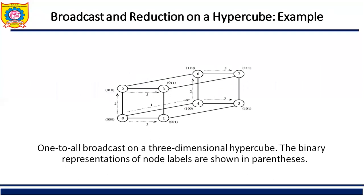This is broadcast and reduction on hypercube example. As shown in this figure, it shows a one-to-all broadcast on an eight-node, three-dimensional hypercube with node zero as the source. In this figure, communication starts along the highest dimension, that is the dimension specified by the most significant bit of the binary representation of a node label, and proceeds along successively lower dimensions in subsequent steps.